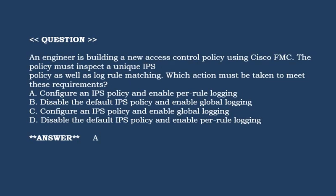Next question: An engineer is building a new access control policy using Cisco FMC. The policy must inspect a unique IPS policy as well as log rule matching. Which action must be taken to meet these requirements? Option A: Configure an IPS policy and enable per-rule logging. Option B: Disable the default IPS policy and enable global logging. Option C: Configure an IPS policy and enable global logging. Correct answer is Option A.